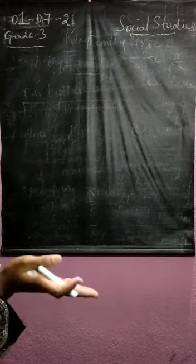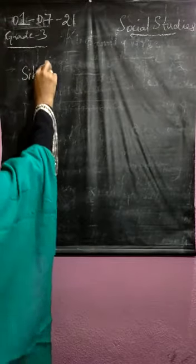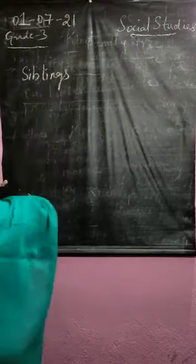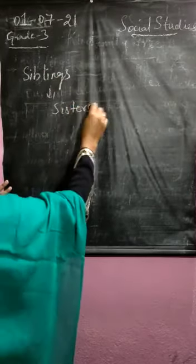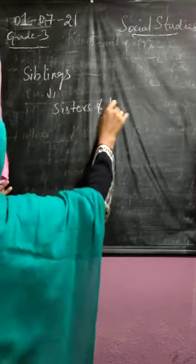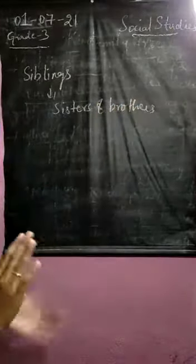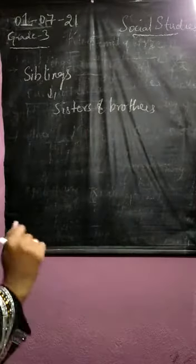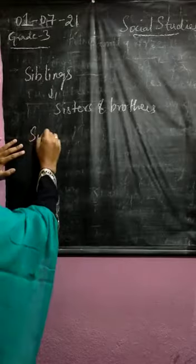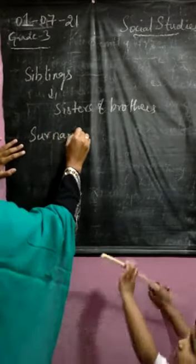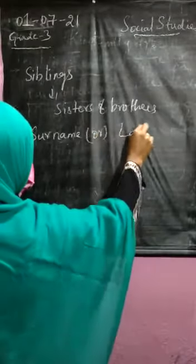What are your sisters and brothers called? Your sisters and brothers are called siblings. It might be a pair of sisters, or sisters and brothers — you can call them siblings. Then coming to the surname: surname is also called the last name.